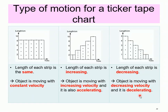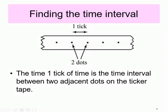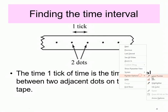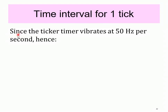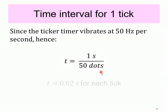I'm going to start on how to calculate the ticker tape now, so I hope you have your paper, pen, and calculator with you. Now we have to find the time interval. As you can see in this particular strip, we have one dot, two dots, three dots, four dots, and five dots. The distance between two dots is what we call one tick. The time for one tick is actually the time interval between two adjacent dots on the ticker tape. Since the ticker timer vibrates at 50 Hz, the time to find one tick is one second divided by 50 dots. The time taken is 0.02 seconds for each tick.